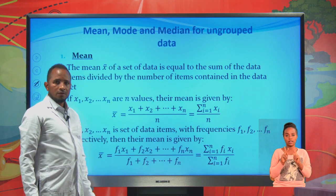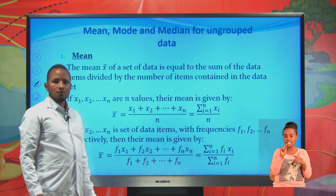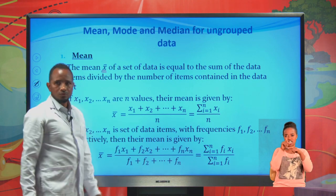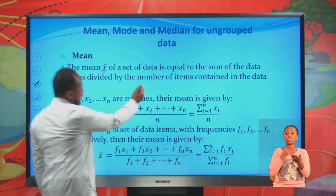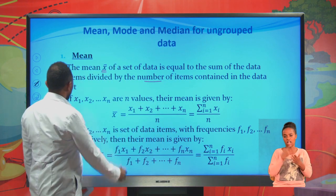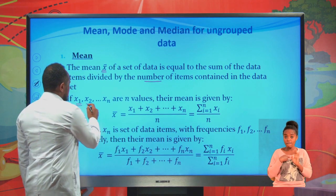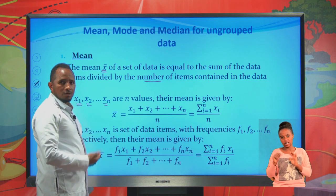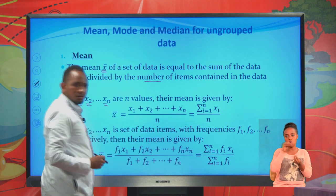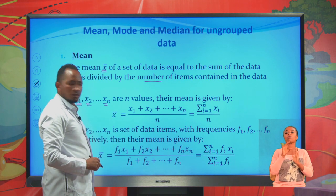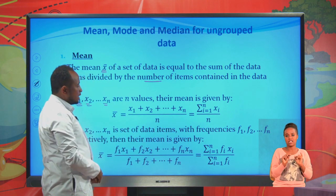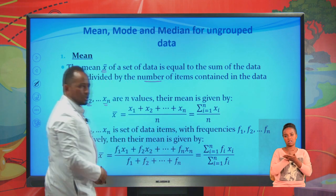First, let's see mean, mode, and median for ungrouped data. The mean, or x-bar, of a set of data is equal to the sum of the data items divided by the number of items. For example, if you have data x1, x2, up to xn, to find their arithmetic mean, simply add the terms and divide by the total number of data n. Or you can write this using summation notation.